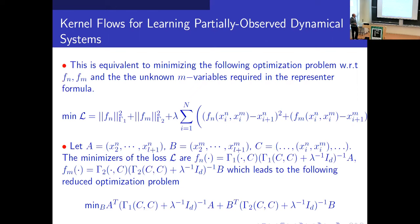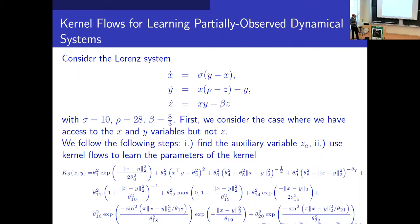This gives an approximation of the first part of the dynamics f_n, second part f_m, and c which is the concatenation of the observables. This leads to an optimization problem with respect to a — the missing part in the representer theorem. For Lorenz, we use a kernel with about 22 parameters for the climate modeling problem. The steps: find the auxiliary variable z_a. We had two cases — in the first we observe x and y but not z; in the second we observe x but not y or z. We then use kernel flows to learn the parameters.